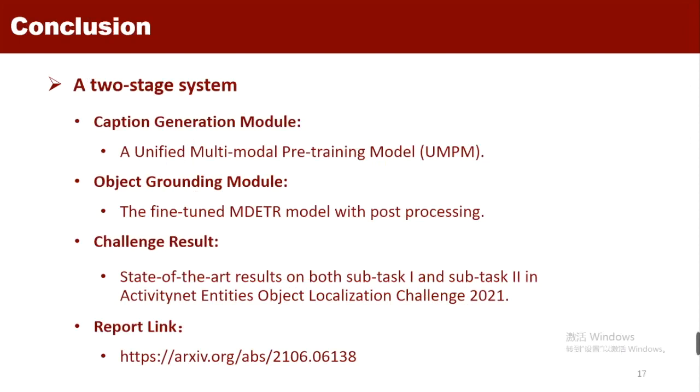In summary, we propose a two-stage method for the challenge, including a unified multimodal pre-training model for detailed caption generation and the fine-tuned MDETR model with post-processing for better grounding. Our method achieves state-of-the-art results on both subtask 1 and subtask 2 in ActivityNet Entities Object Localization Challenge 2021. More details can be found in our technical report. Please feel free to contact us if you have any questions. Thank you.